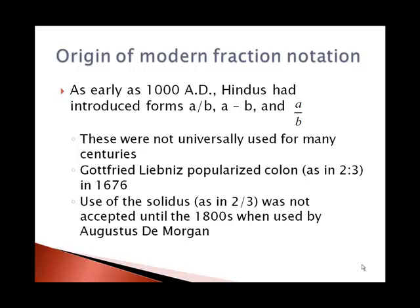Leibniz popularized the colon, as in 2 colon 3 for two-thirds, in the late 1600s. The use of the solidus — the slash — in two-thirds was not accepted until the 1800s, when it was used by mathematician Augustus de Morgan.